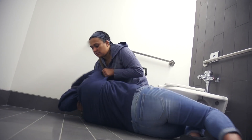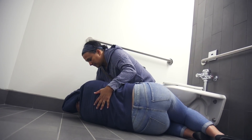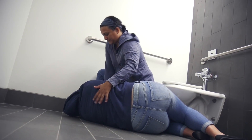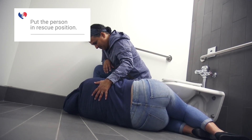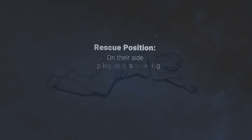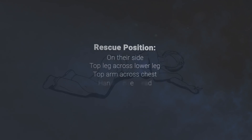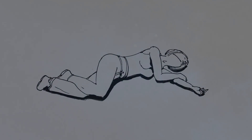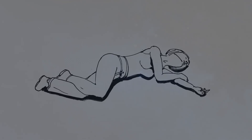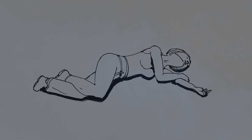Some people might feel sick after getting Narcan with nausea, vomiting, or diarrhea. If you must leave them for any reason, make sure to place them in the rescue position. Turn them on their side with their top leg across and resting on their lower leg. Do the same with their arm and then place both hands underneath their head. The rescue position provides support and safety and prevents them from rolling onto their stomach and potentially choking or coughing if they vomit.